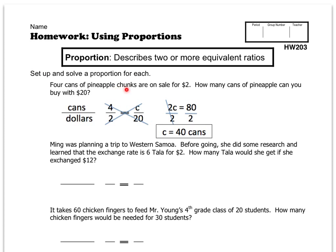Four cans of pineapple chunks are on sale for $2. How many cans of pineapple can you buy with $20? We're comparing cans to dollars — for $2 you can buy four cans. So we set up a proportion, writing what we're comparing: cans to dollars. We have four cans to every $2.